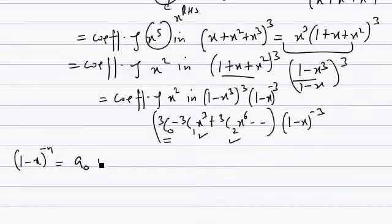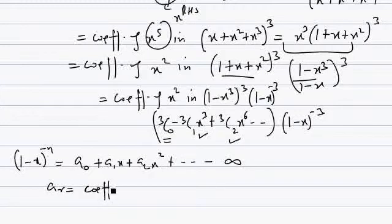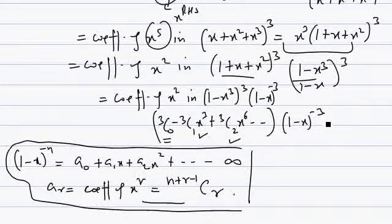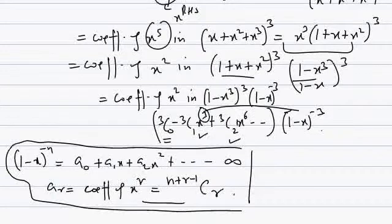The expansion of (1 - x)⁻³ is an infinite series — binomial theorem with negative index — where the coefficient of x^r is (n + r - 1)Cr, here n = 3. The terms x³ and x⁶ from the first bracket cannot combine with terms in the second bracket to give x², since that would require negative powers of x, which don't exist. So only 3C0 = 1 contributes.